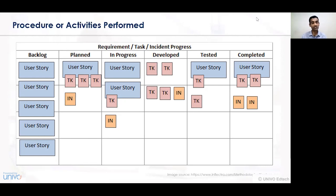For a user story, if a particular query has been raised or a problem identified, then priority is assigned — whether it's TK, IK, IN, and so on. Every level has a certain work, and when a particular work gets developed or completed, the card is moved according to the user story. TK and IN denote certain persons, indicating which person raised which card and which query was placed.